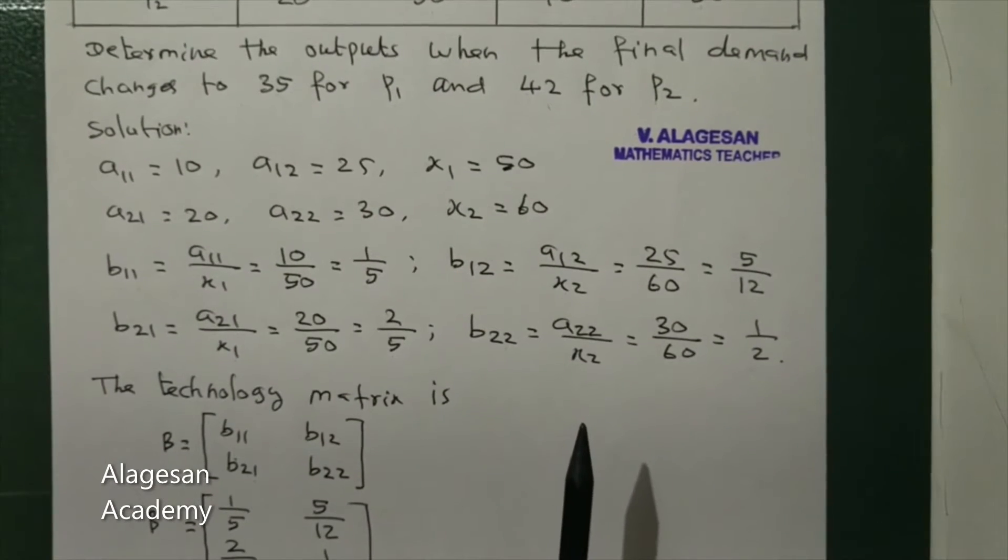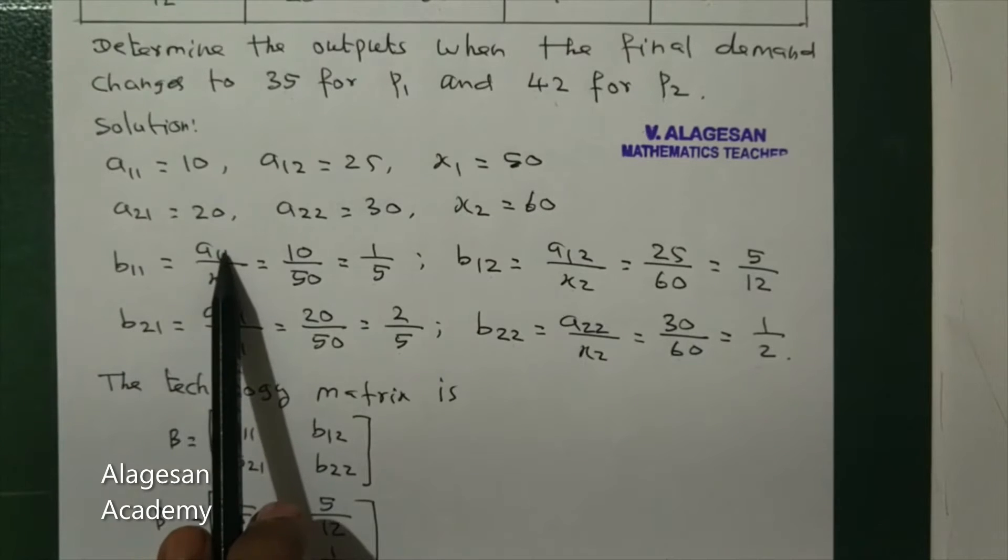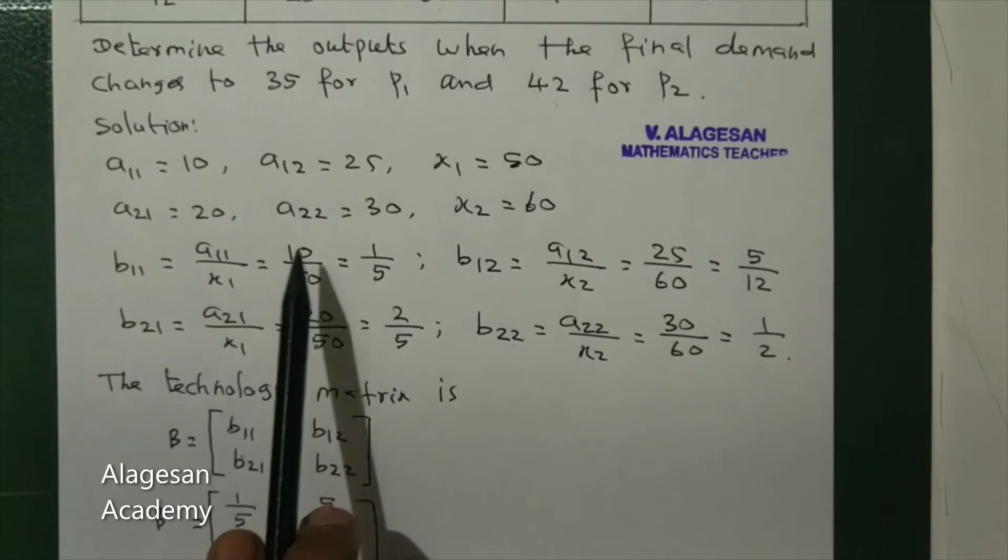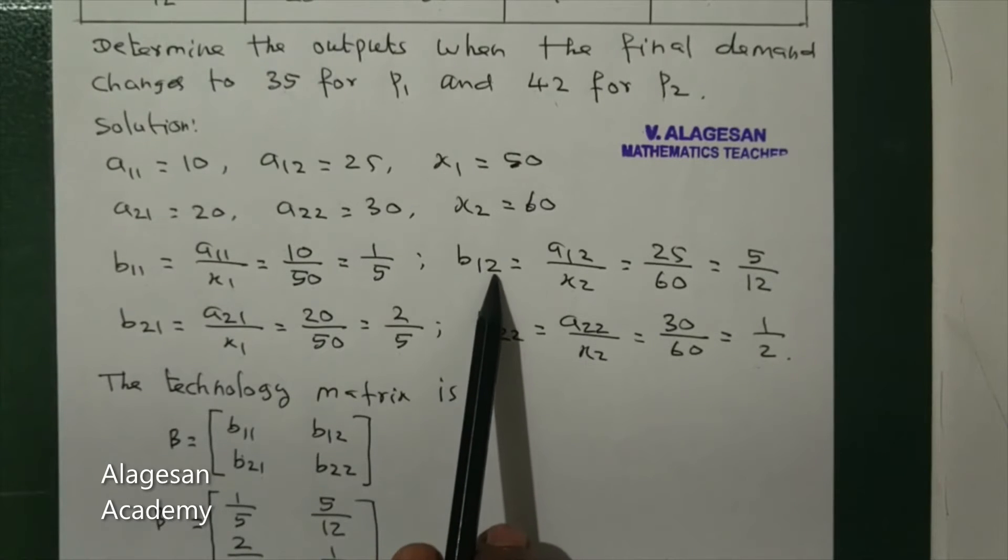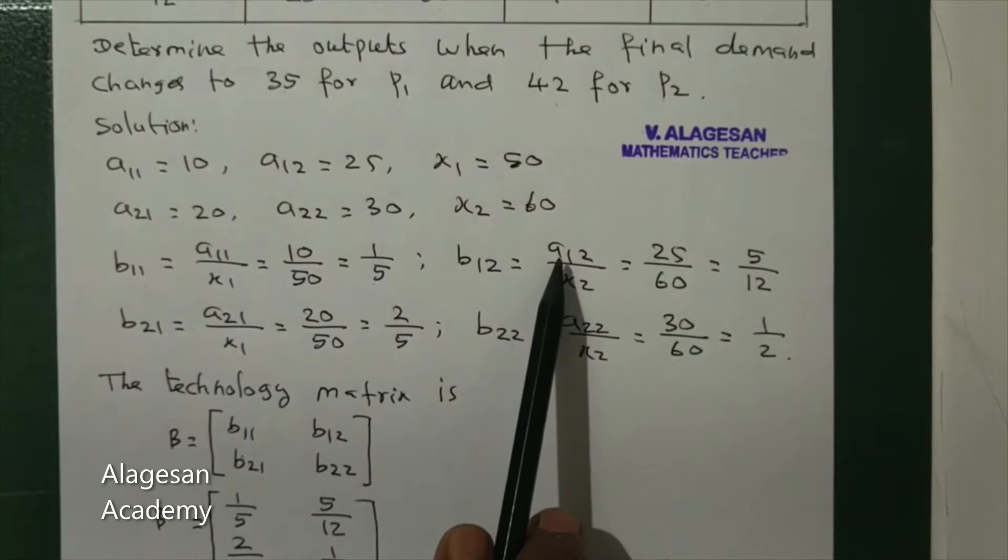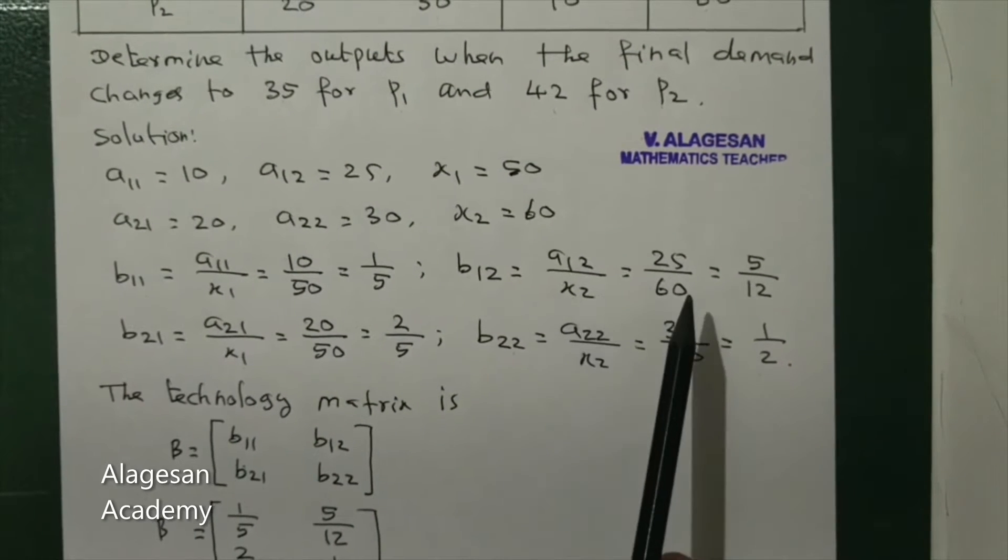First we have to find b11, that is equal to a11 by x1: 10 by 50, cancel to get 1 by 5. b12 equal to a12 by x2: 25 by 60, cancel to get 5 by 12.